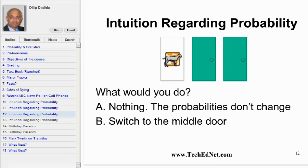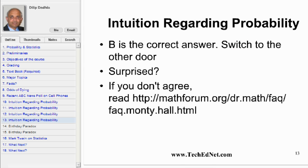There are two choices. A: nothing — the probabilities didn't change so I don't have to do anything. B: switch to the middle door. B is the correct answer — switch to the other closed door. Remember, if you pick a door at random you will win approximately one third of the time. So if you did not switch, you would win approximately 33 cars in 100 games. What happens to the 67 cars that you did not win? They were behind the other door. So if you switched every time you will win 67 times and lose 33 times. If you are still not convinced, please read this article.